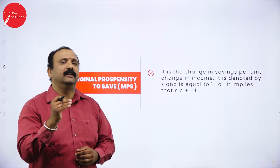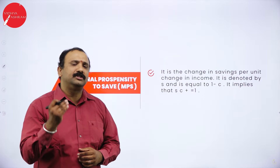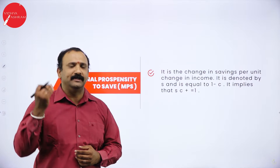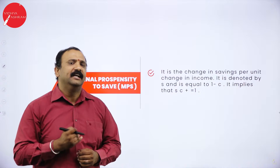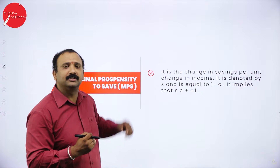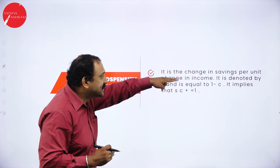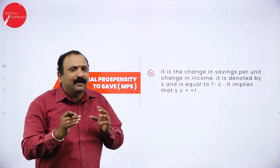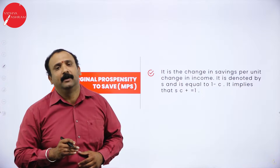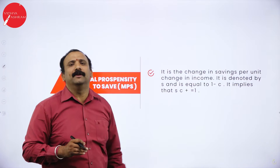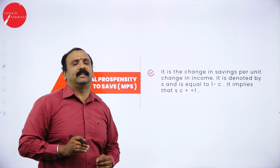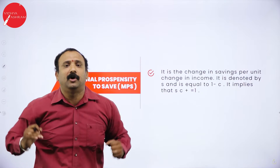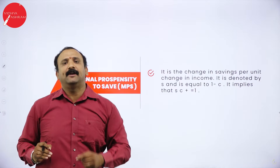We feel that with the rise in income or with equal income, we want to save more. This month if you saved 10 rupees, next month you want to save 12 rupees, the month after 15 rupees. Your mind always triggers you asking: can you save more and more? So the concept here is that it is the change in savings per unit change in income — the moment there is a small change in income, the propensity to save also starts moving up.